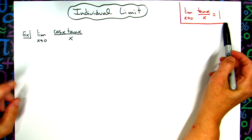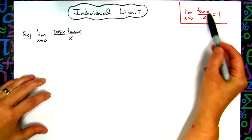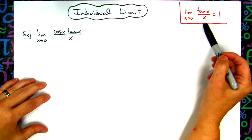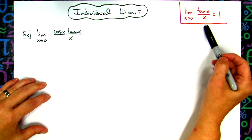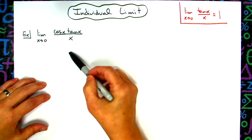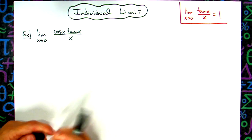Hopefully at this point in a Calc 1 class you would have already taken a look at some of these special trig properties and went through proofs to justify those. After my students have proved that these are true limit properties, then I allow them to use them in their limit problems.